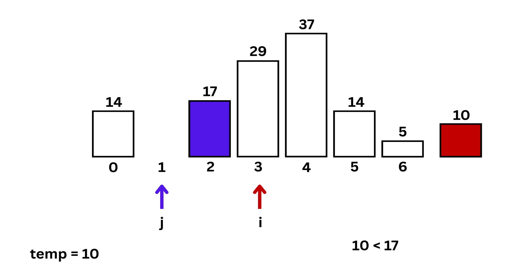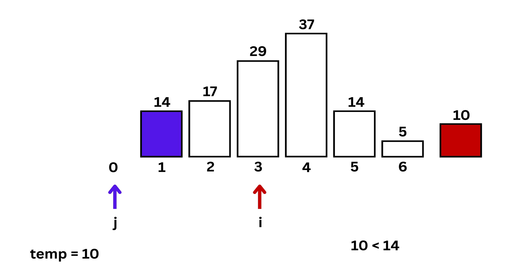Again, 10 is smaller, so we shift 17. Now, j becomes 0, pointing to 14. 10 is still smaller, so we shift 14. The list now becomes like this.